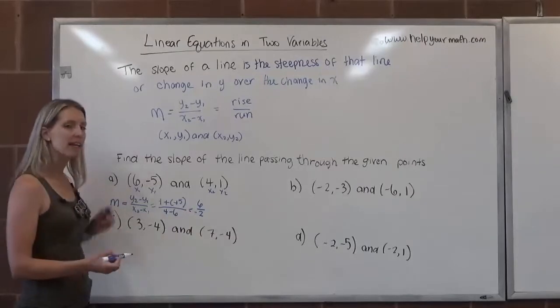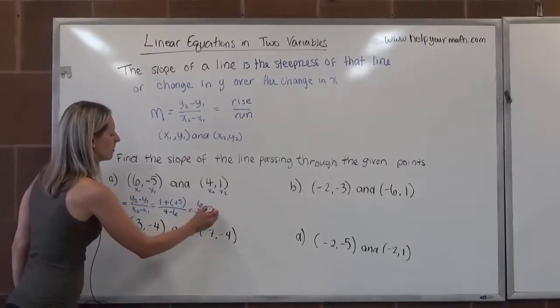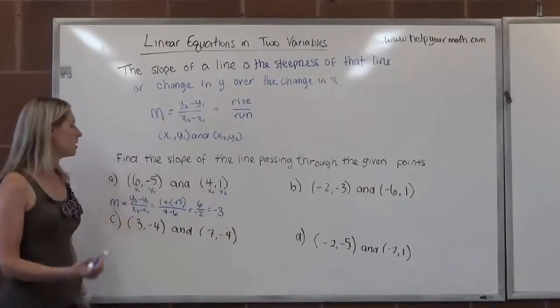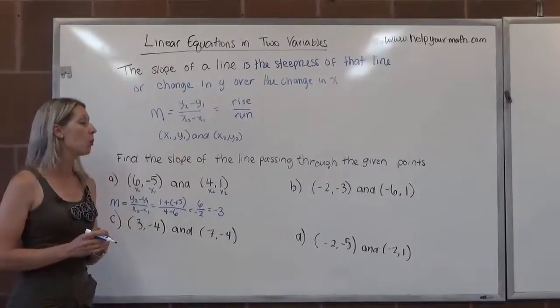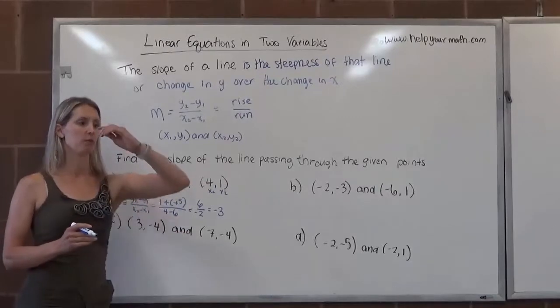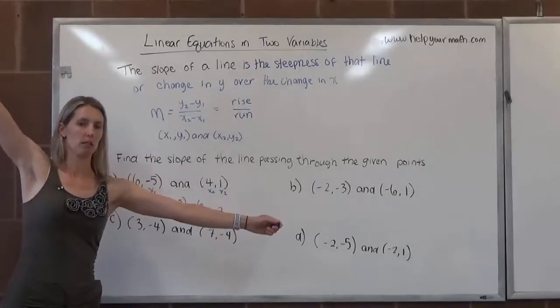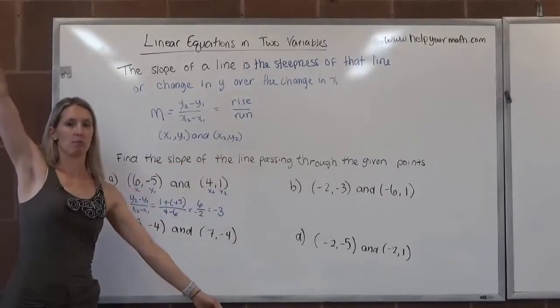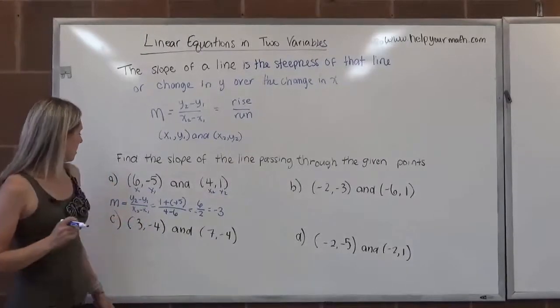We want to simplify as much as we can. 6 divided by negative 2 is negative 3. So this particular line would have a slope of negative 3. What that tells me about the line is that going from left to right, it is going down. So it might look like this. Well, it's negative 3, so it's actually pretty steep.